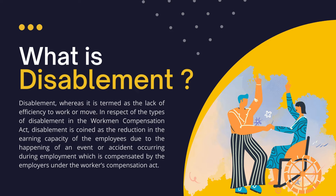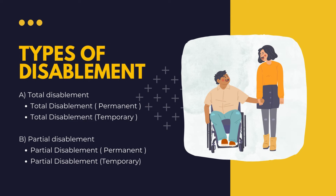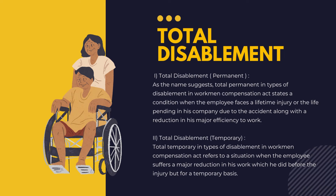The types of disablement under the Workmen's Compensation Act can be classified into two: total disablement and partial disablement. Each of these can be further categorized as temporary disablement or permanent disablement.